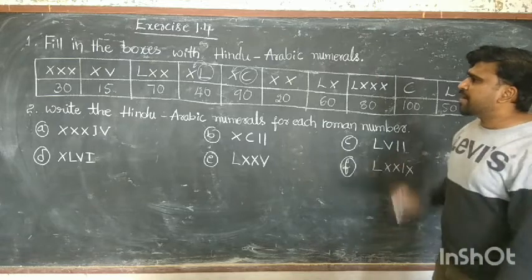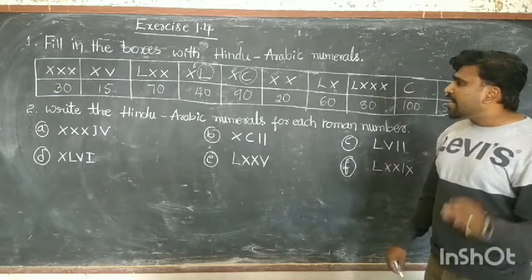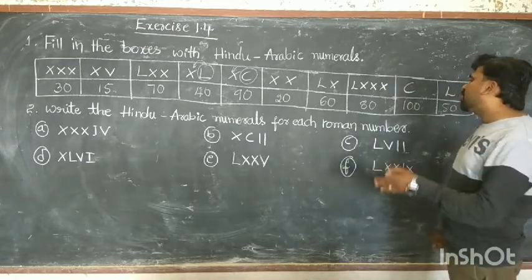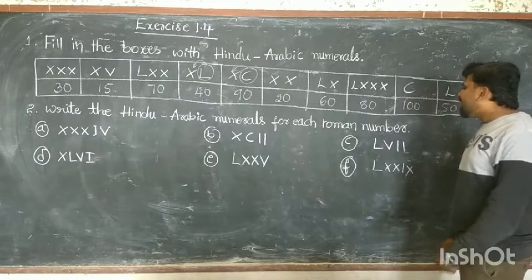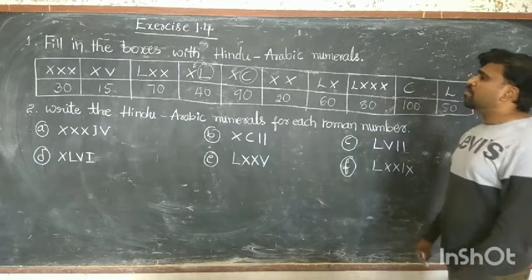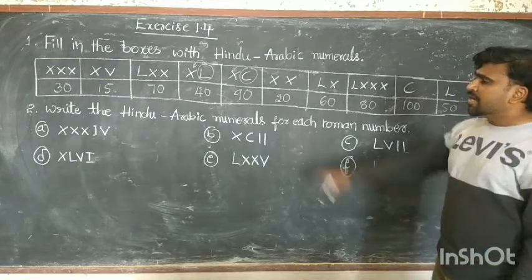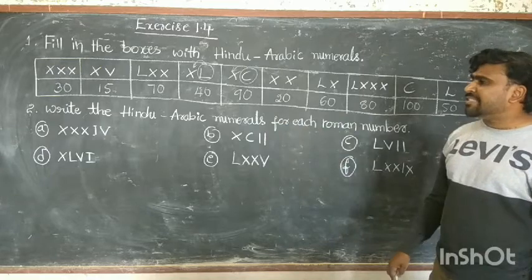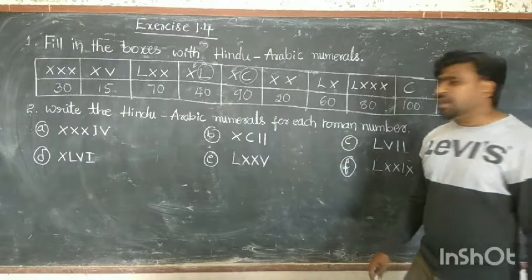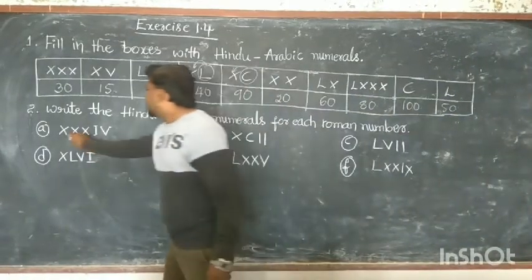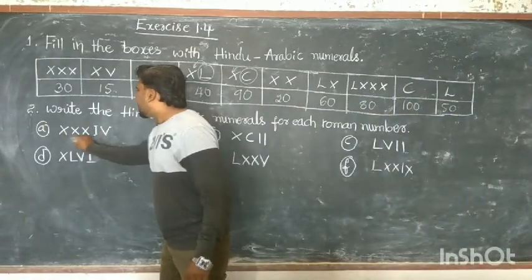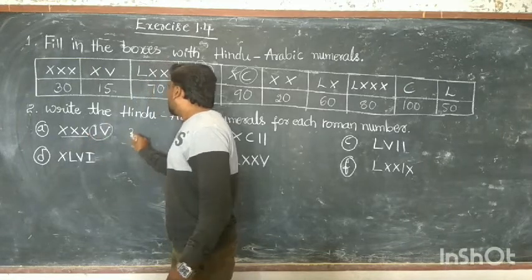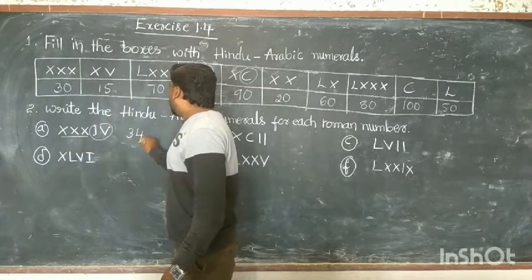Next, the second part: write the Hindu-Arabic numerals for each Roman number. See here: XXX plus IV — that is 30 plus 4, which is 34.